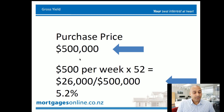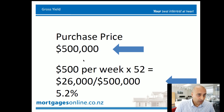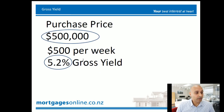Basically what that is telling you is that you're getting 5.2% as an income of the $500,000 you're spending. So that's what the gross yield is telling you.